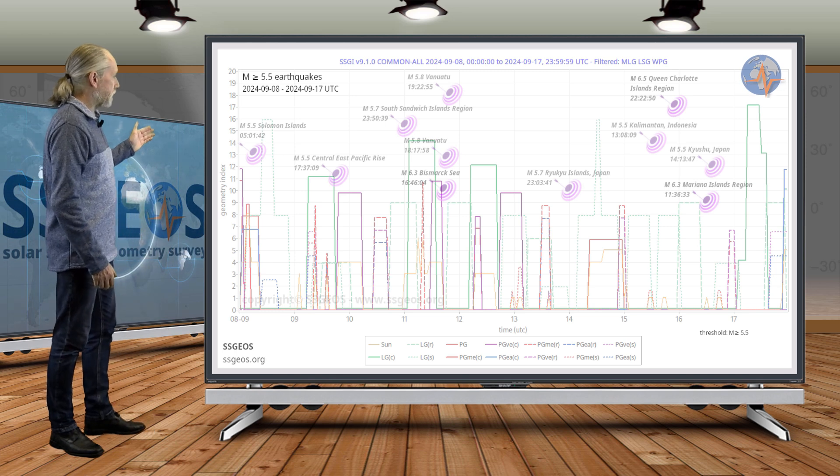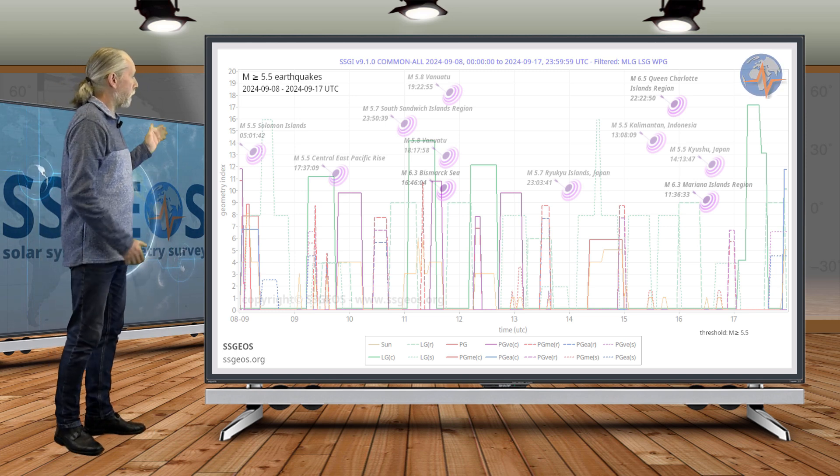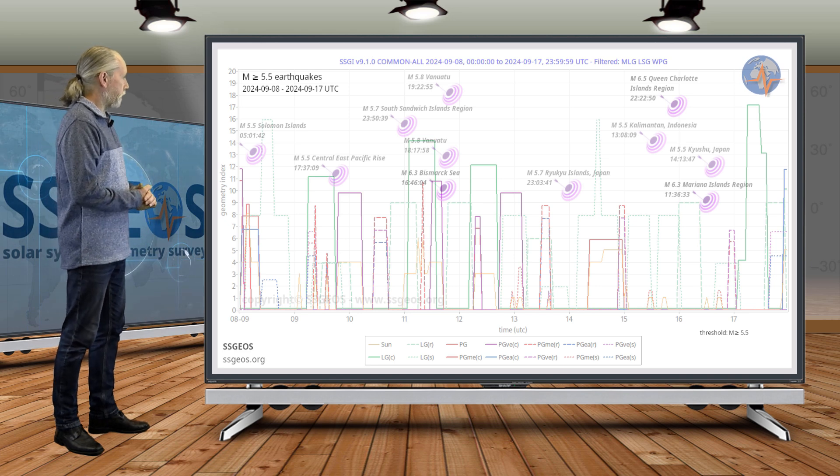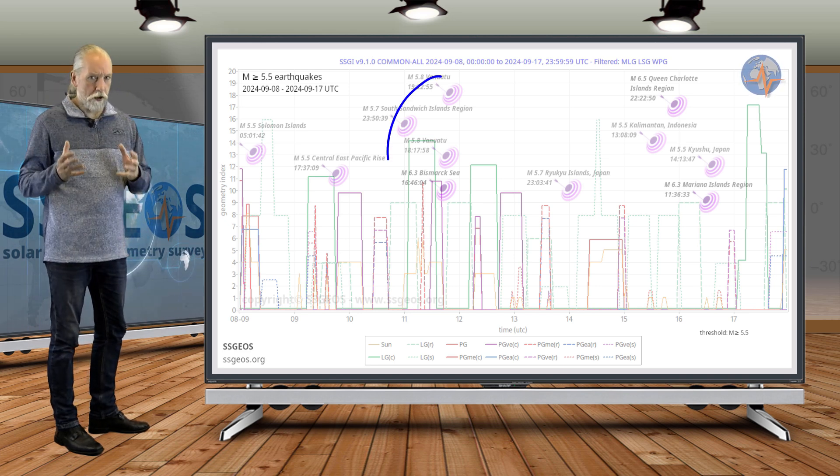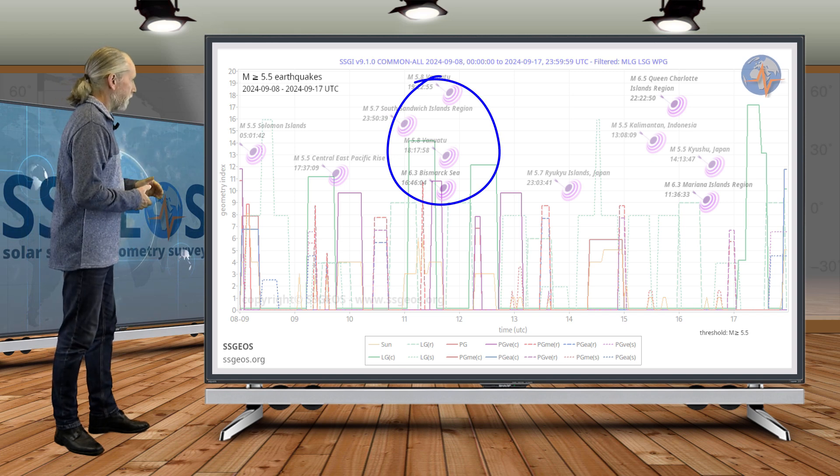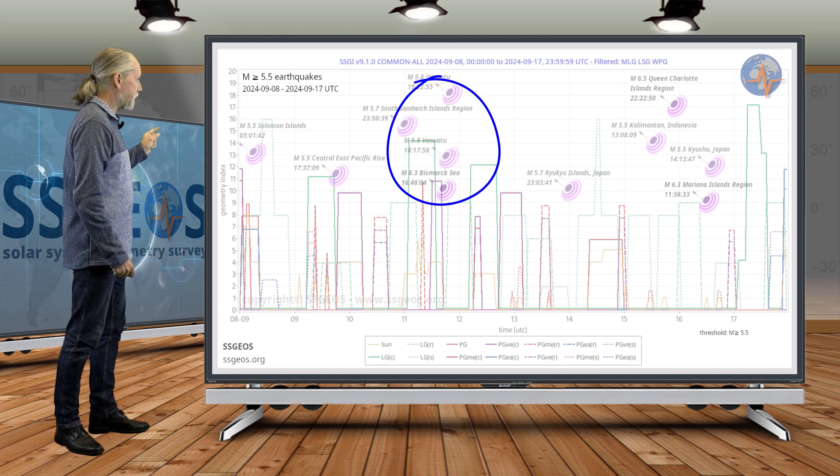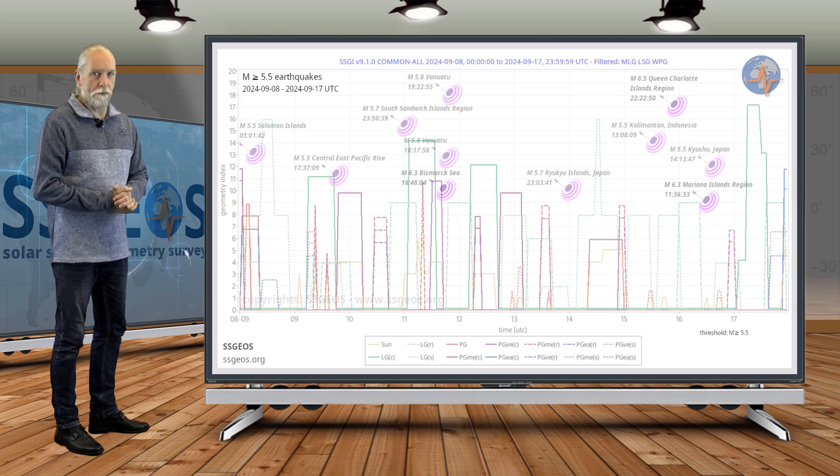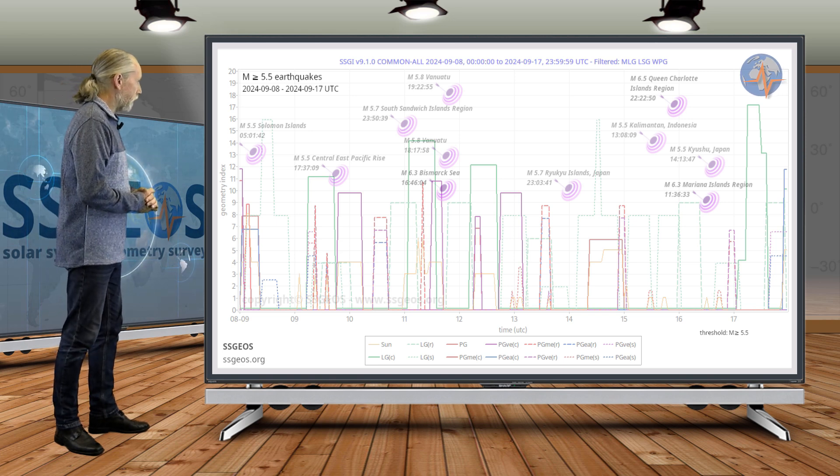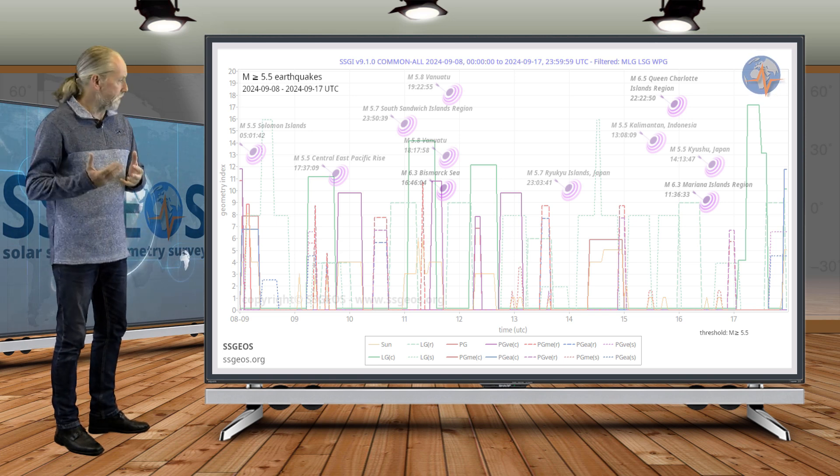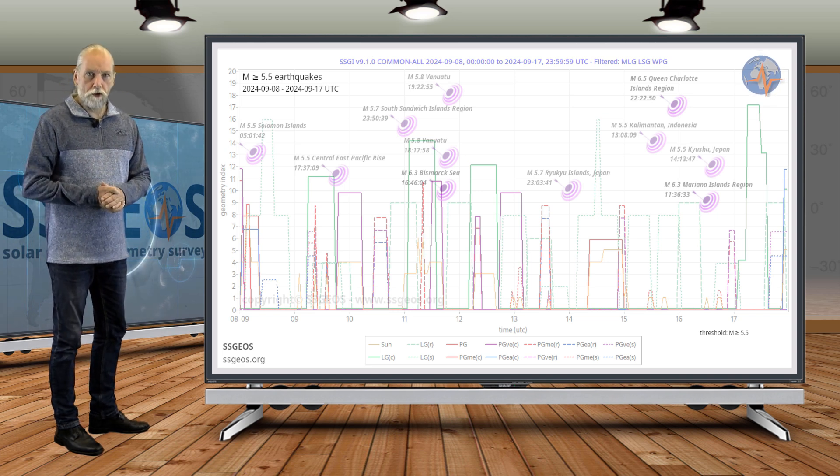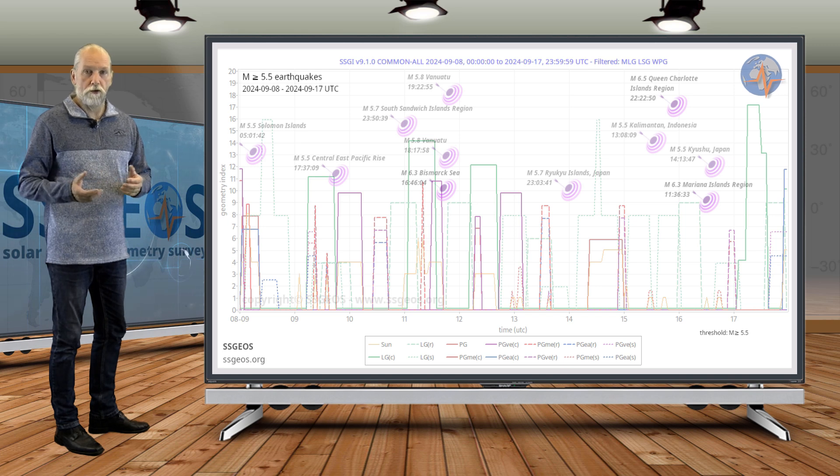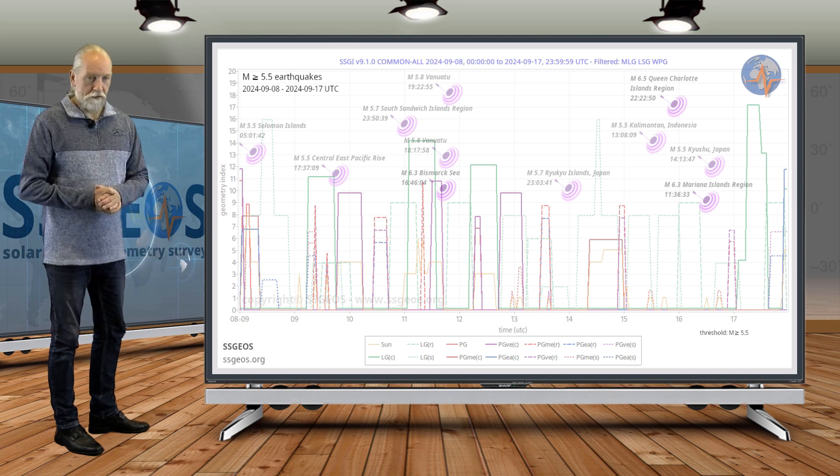We see that on the 8th already 5.5 at Solomon Islands, 5.5 on the 9th at Central East Pacific Rise, and then we had a cluster of stronger earthquakes that peaked magnitude 6.3 at the Bismarck Sea, occurring all around the 11th. That was the time we're in the middle of the convergence to quadruple conjunction, near quadruple conjunction as I explained in the previous update.